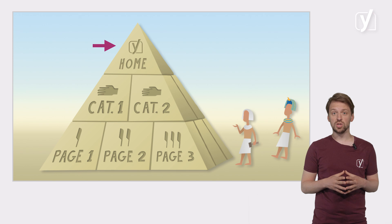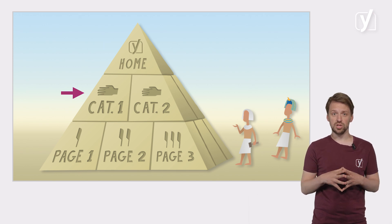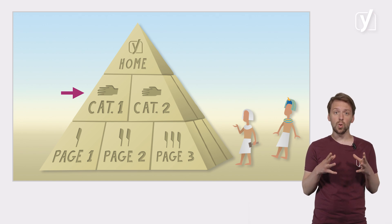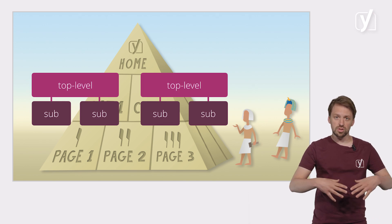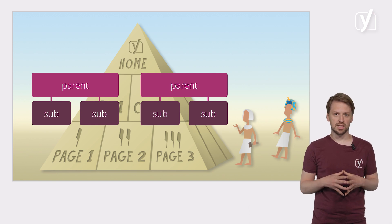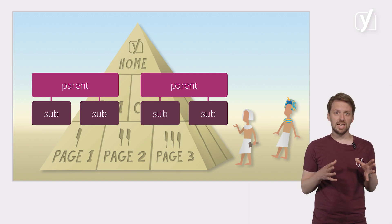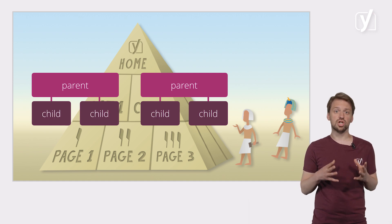We think it looks like a pyramid with a number of levels. Your homepage is all the way at the top, and then you have some category pages under the homepage. You should be able to file all of your content under one of these categories. And if your site is larger, you'll have some categories that fall under these categories as well. WordPress calls the main or top-level categories parent categories.